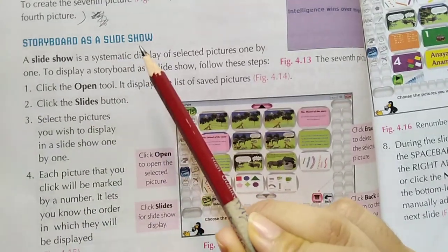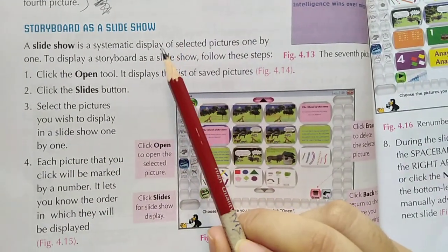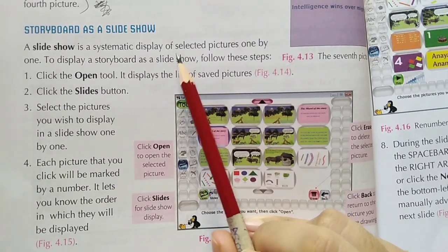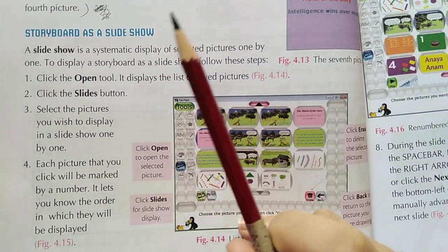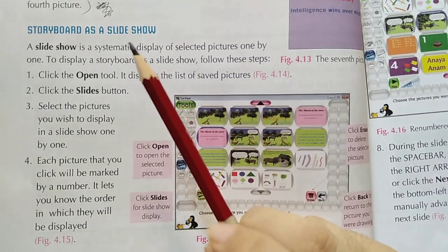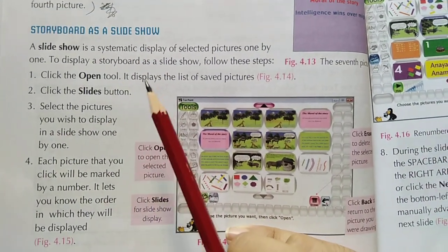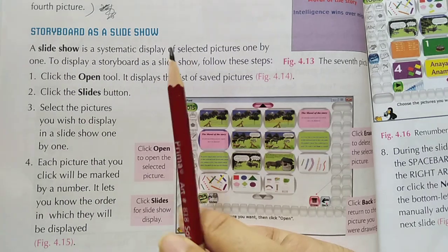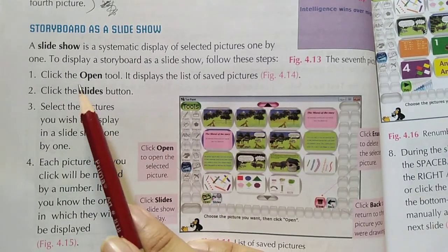Slideshow is a feature in which your pictures are automatically displayed in a line, or you can see them in one go. To do the slideshow, just click on the Open tool which is present here.